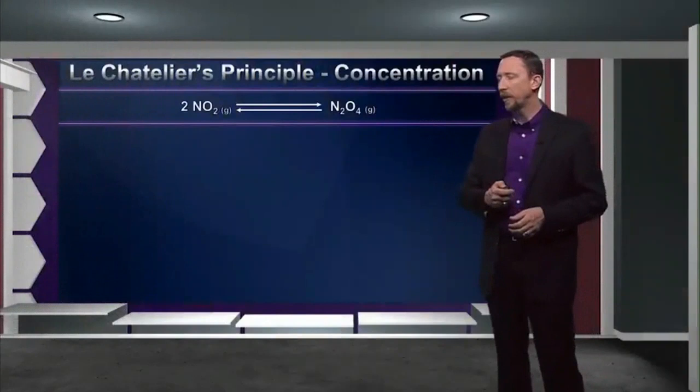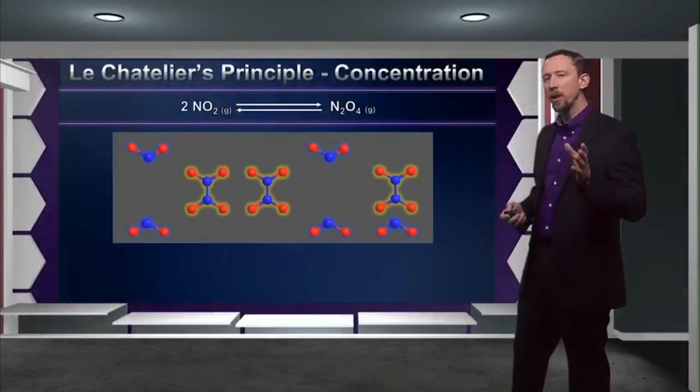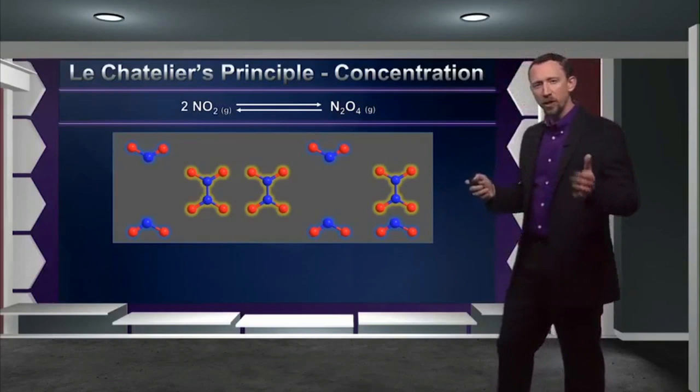Let's take a look at our familiar reaction: NO2 in equilibrium with N2O4. Let's assume we're going to change concentrations. Let's pretend this is the equilibrium mixture. The equilibrium constant is not exactly one, but I've set it up this way to demonstrate the principle. I've defined N2O4 as the product and NO2 as the starting material, and they're confined within a certain space.